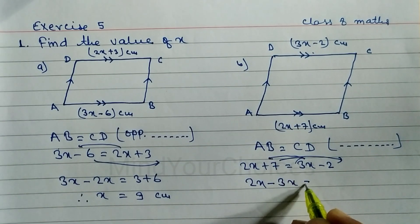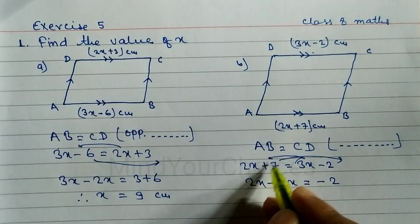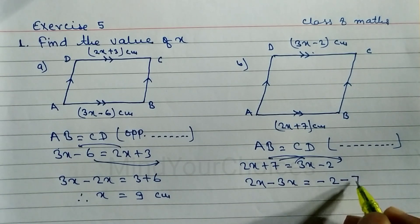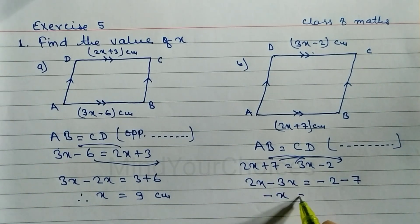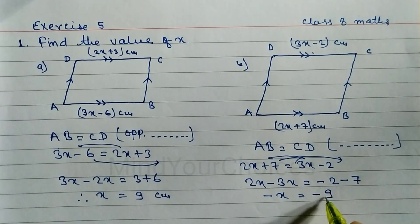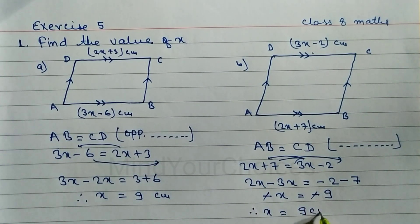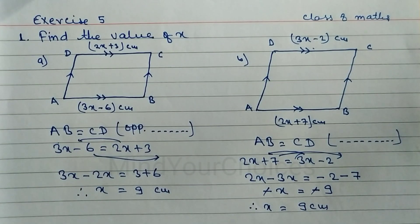So we write 2x minus 3x is equal to minus 2 minus 7, giving minus x is equal to minus 9. The negatives cancel, therefore x is equal to 9. Hope you understand question number b.